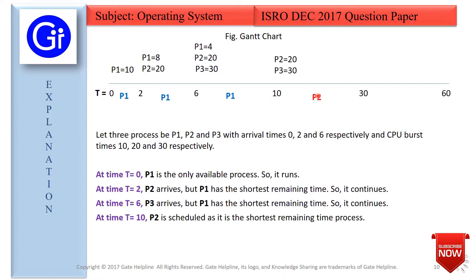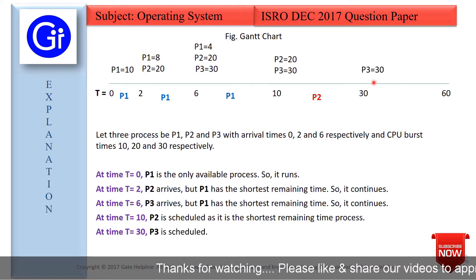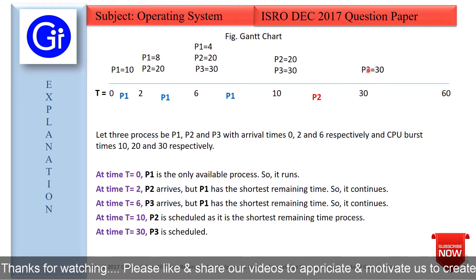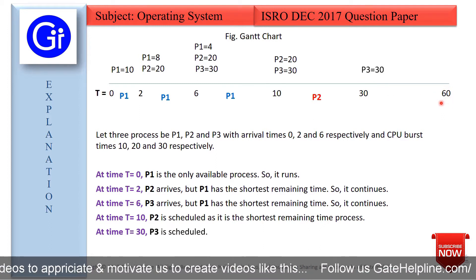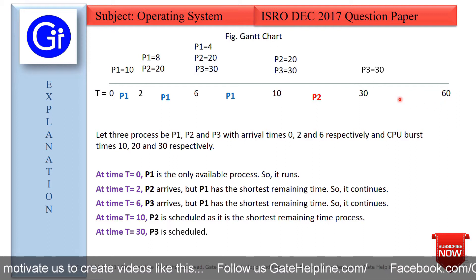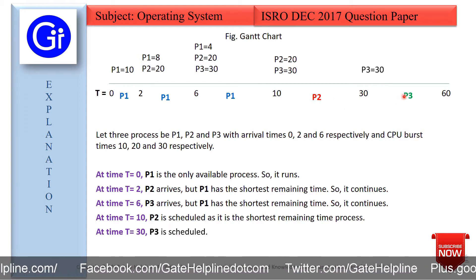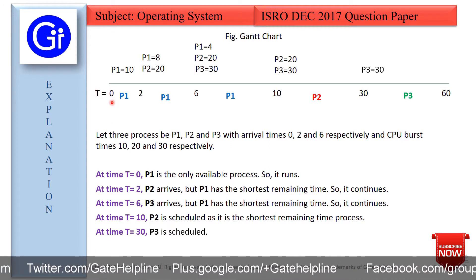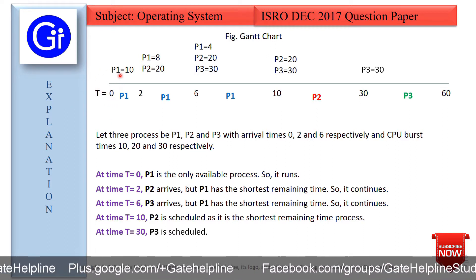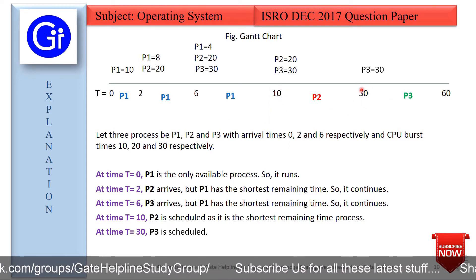From P1 to P2 is a context switch. At time t=30, P2 finishes and we are left with only P3, which has a burst time of 30. So P3 continues from t=30 until t=60. The context switch from P2 to P3 is the third context switch. So the three context switches occur at t=0, t=10, and t=30.